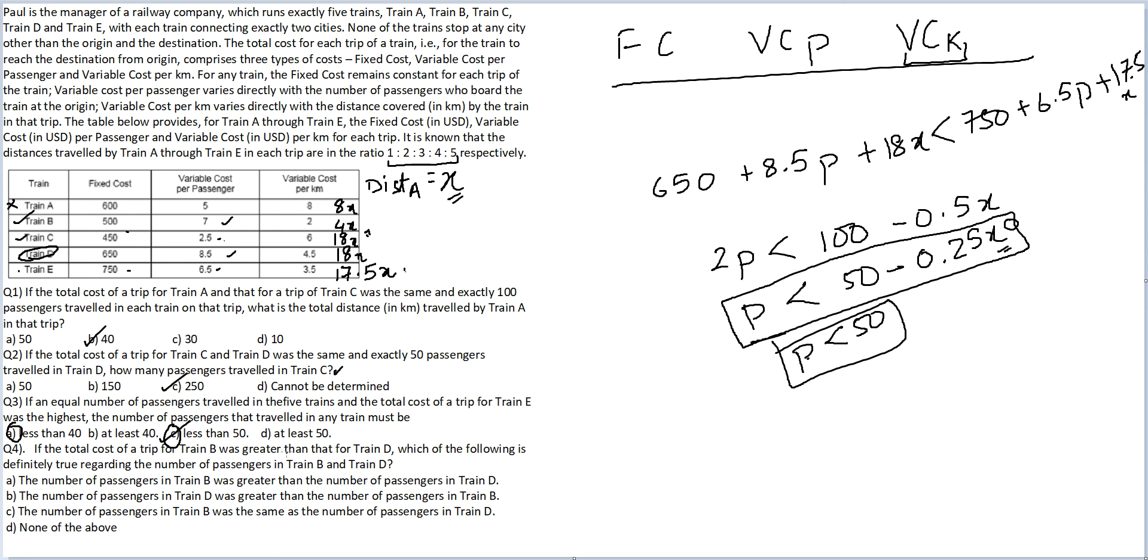If the total cost of a trip for train D was greater than that for train B. If you notice, fixed cost is high for train D. Variable cost per kilometer, this amount is also higher for train D: 18X. Of course D is winning. 650, this is 500. Which of the following is definitely true regarding the number of passengers in train B and D? The only way D can end up beating B is if there are more passengers in train D. Because fixed cost, D is winning. Variable cost per kilometer cumulative, it is getting 4X, it is getting 18X. Here also D is winning. The only way D ends up beating B is if the number of passengers in D is greater than the number of passengers in train B. This should be the answer. And all your questions are done.